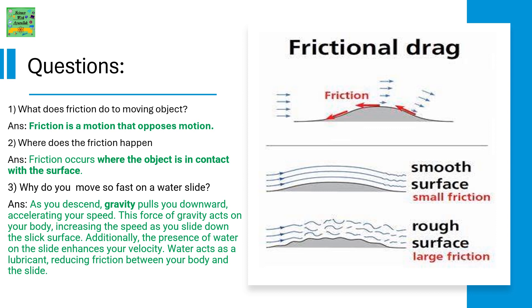Why do you move so fast on a water slide? As you descend, gravity pulls you downward, accelerating your speed. This force of gravity acts on your body, increasing the speed as you slide down the slick surface. Additionally, the presence of water on the slide enhances your velocity. Water acts as a lubricant, reducing the friction between your body and the slide.